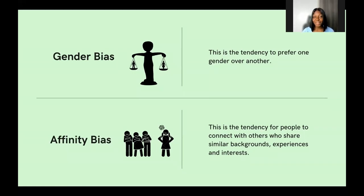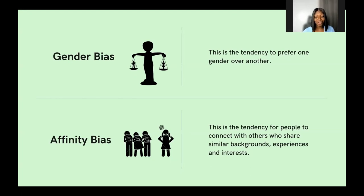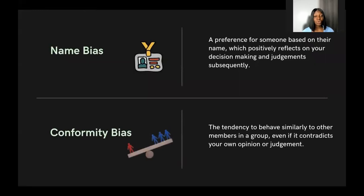Affinity bias is where we have a tendency to connect with people who have similar backgrounds or share similar experiences. A simple instance: when you walk into a hall with two groups — on the right, people who look similar to yourself, same skin color or race; on the left, people very different from you. We tend to navigate toward and take sides with people who look like us, and this often affects our judgments toward others.